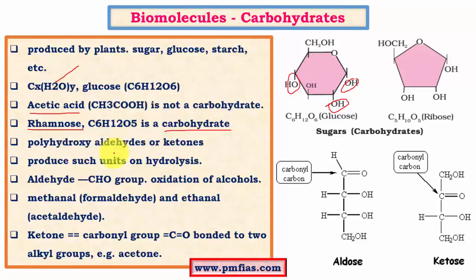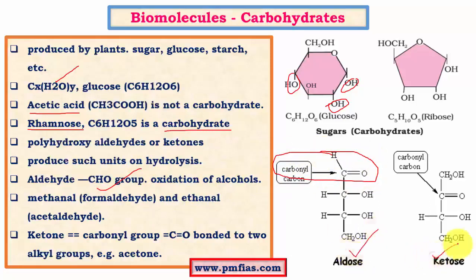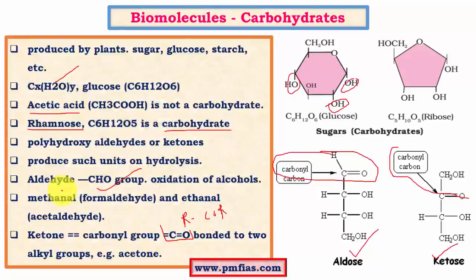All carbohydrates are polyhydroxy molecules — that is, they have multiple hydroxyl groups (OH). Most carbohydrates are either aldehydes or ketones. Aldehydes have a CHO group, obtained from oxidation of alcohols — carbohydrates with an aldehyde group are called aldose. Ketones have a carbonyl group (C=O) with the general formula R-CO-R — carbohydrates with a ketone group are called ketose.